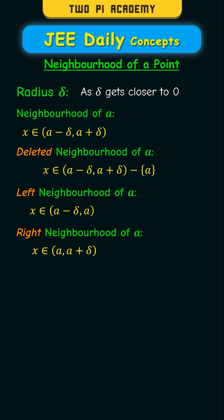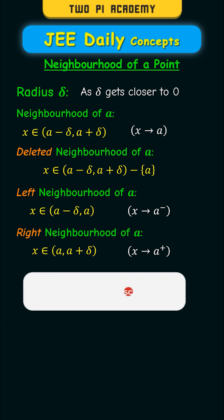As the radius delta gets closer to zero for the neighborhood of a, you can say that x tends to a. For the left neighborhood of a, x approaches a from the left, and for the right neighborhood of a, x approaches a from the right.